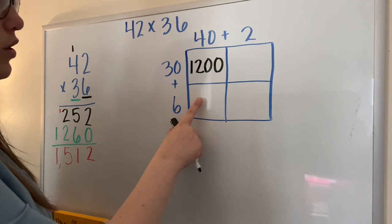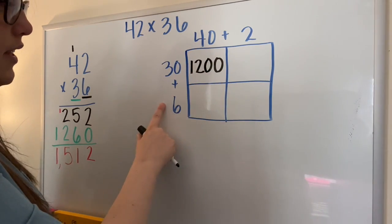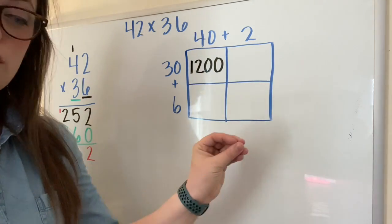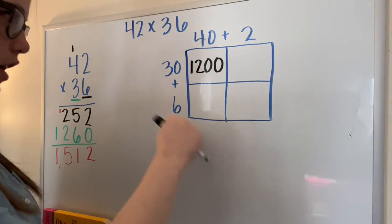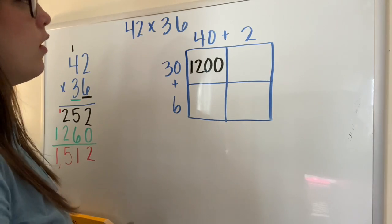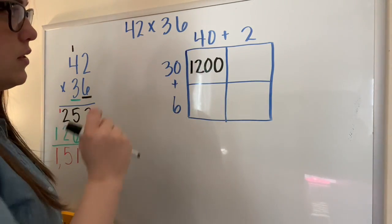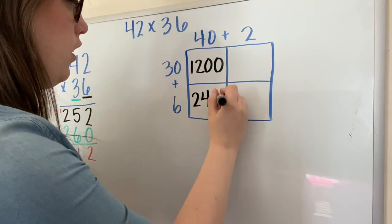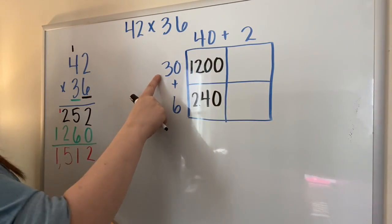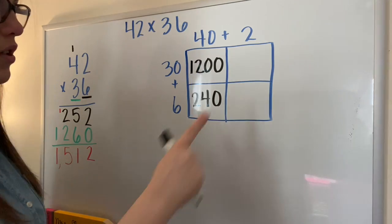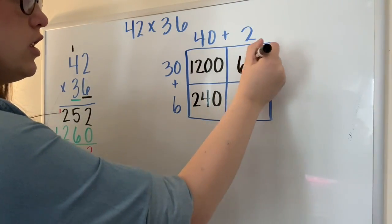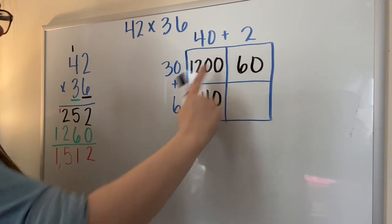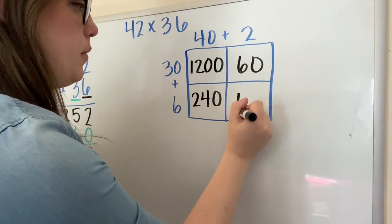Next, I'll multiply 40 by six. It does not matter which boxes you choose first, as long as you get them all done. 40 times six is going to give me 240. 30 times two in this box is going to give me 60. And six times two in this box is going to give me 12.